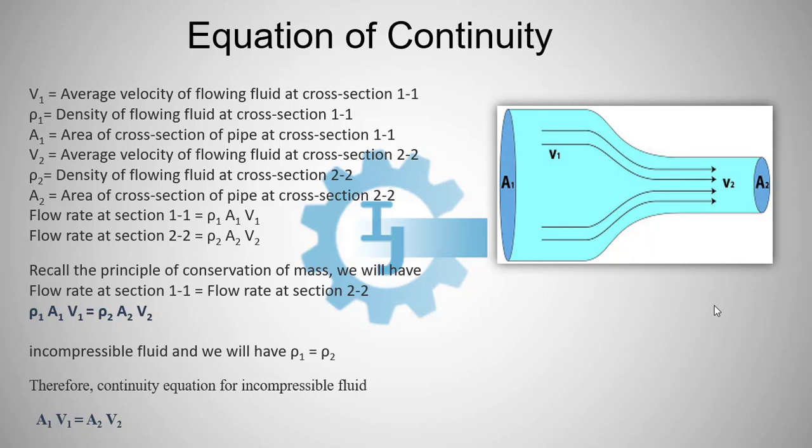Again, here this is section 1-1 and here this is section 2-2. V1 is the average velocity of flowing fluid at cross section 1-1.